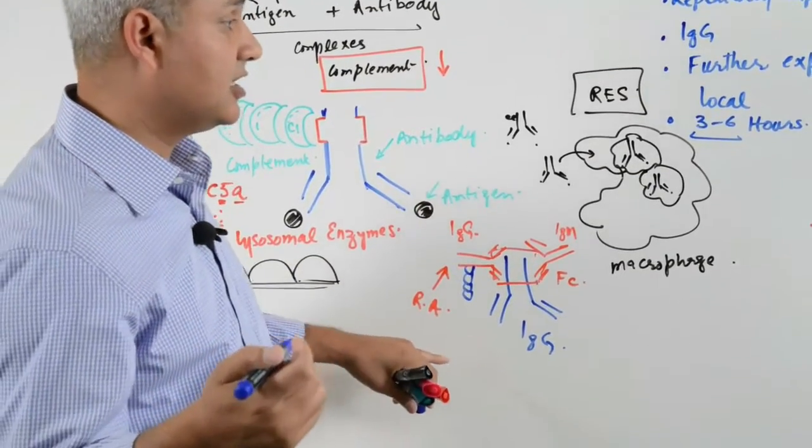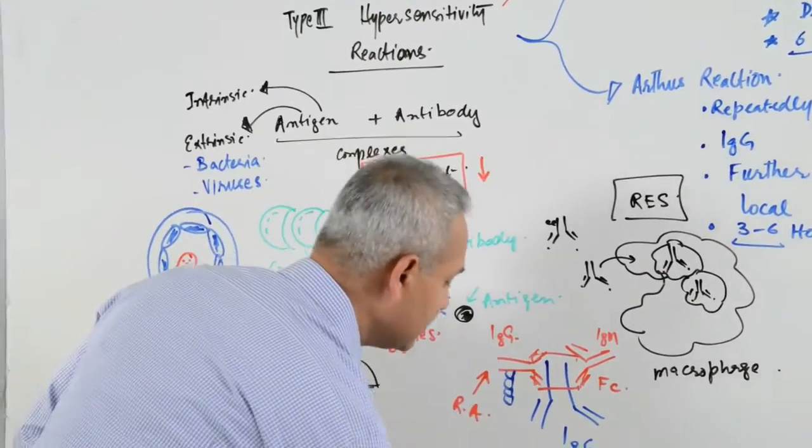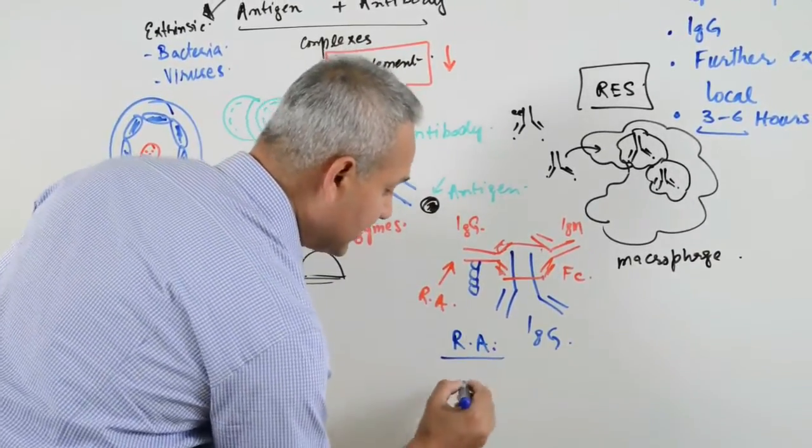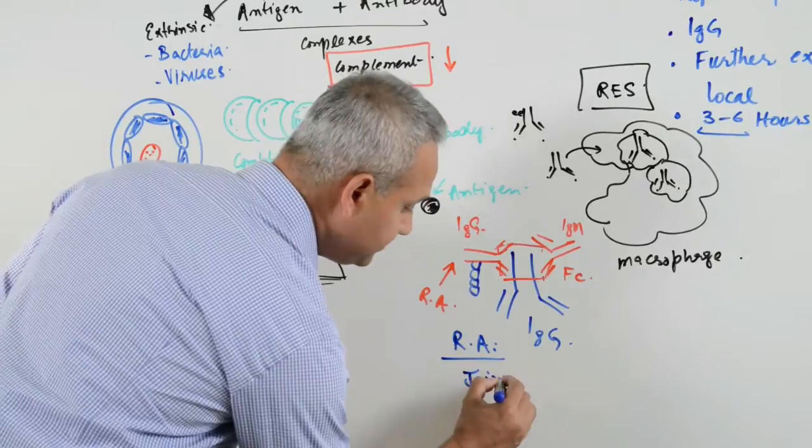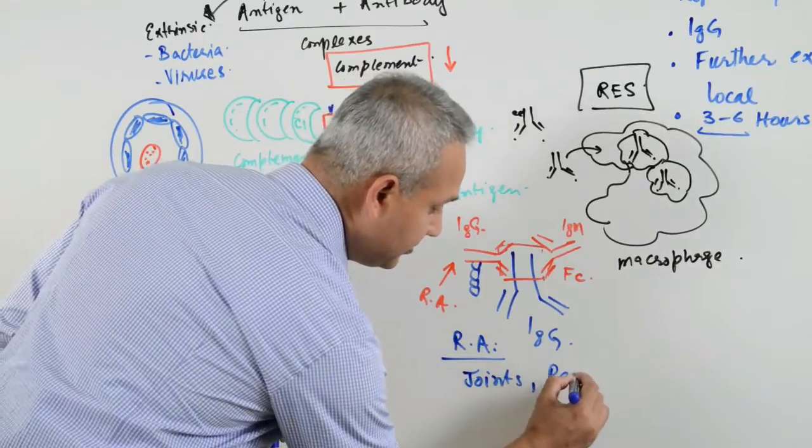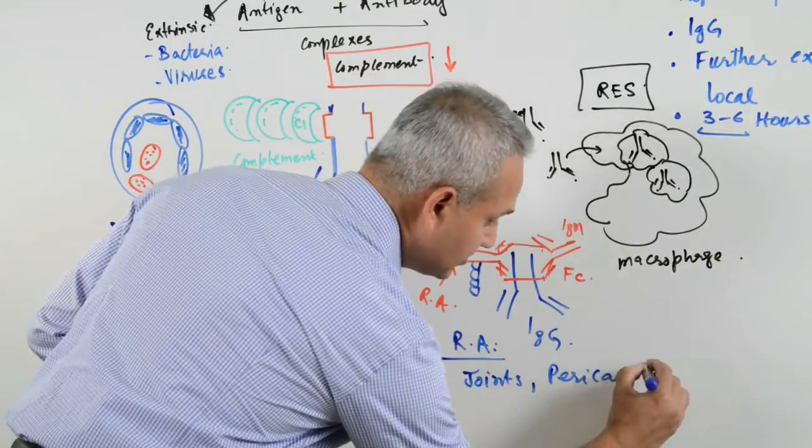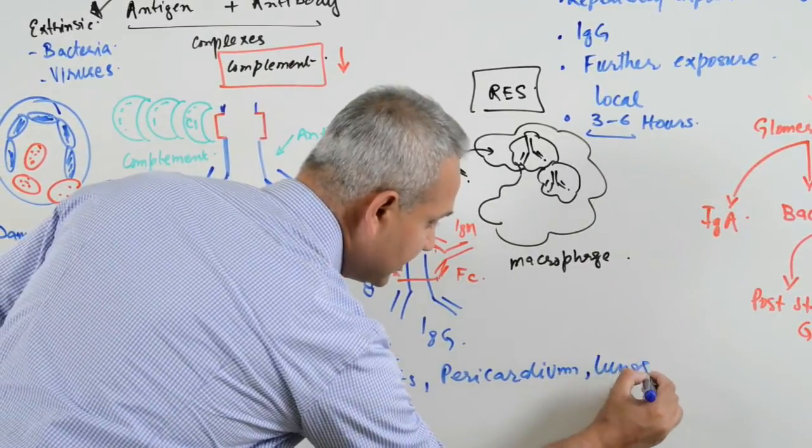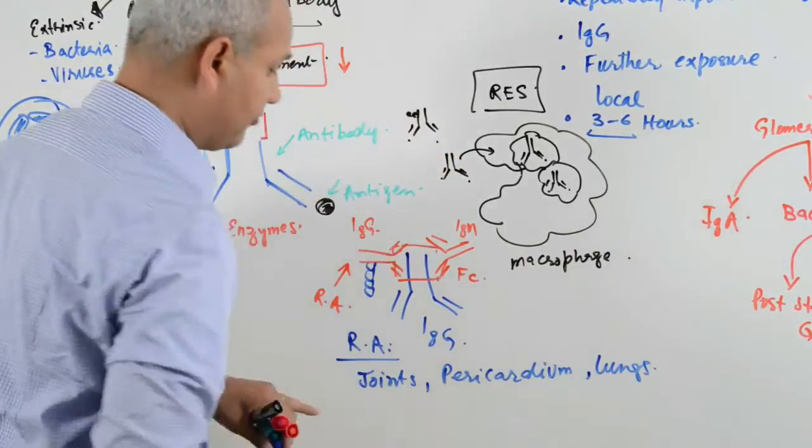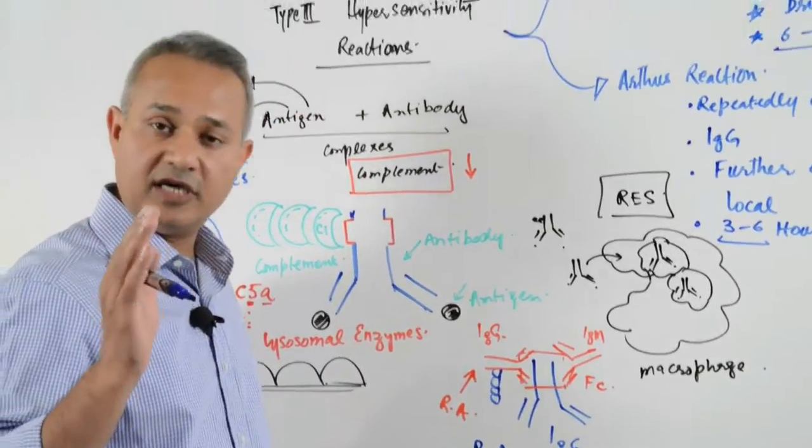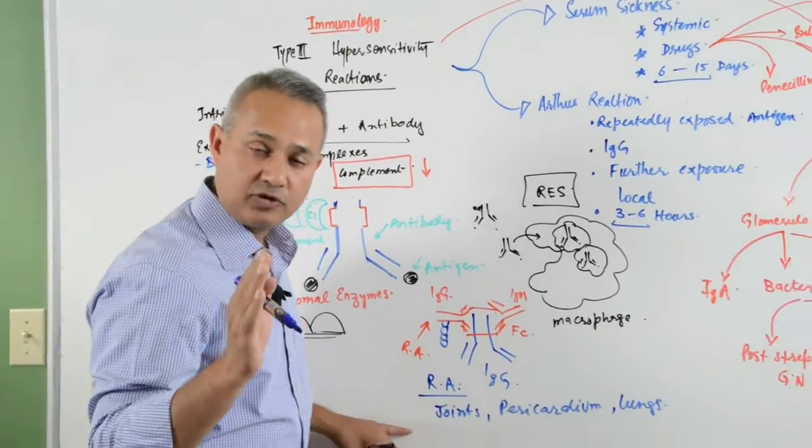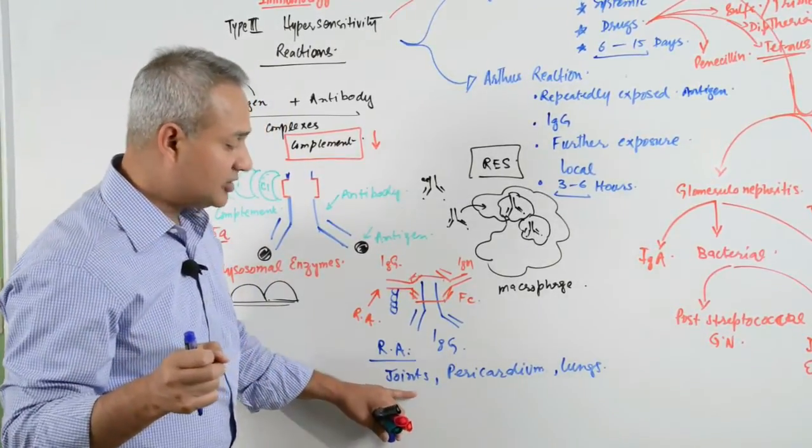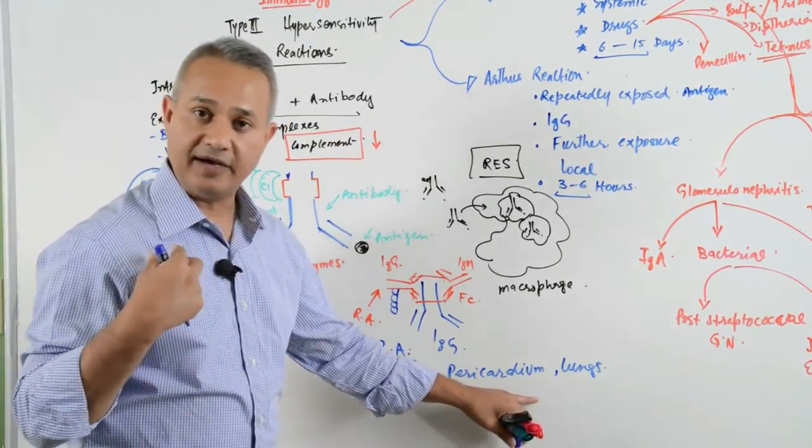The interesting thing about rheumatoid arthritis is that RA targets joints, pericardium, and lungs. It can attack other areas too, but these are the most common. Again, chronic inflammatory autoimmune disease prevalent in young women affecting the joints, pericardium, and lungs.